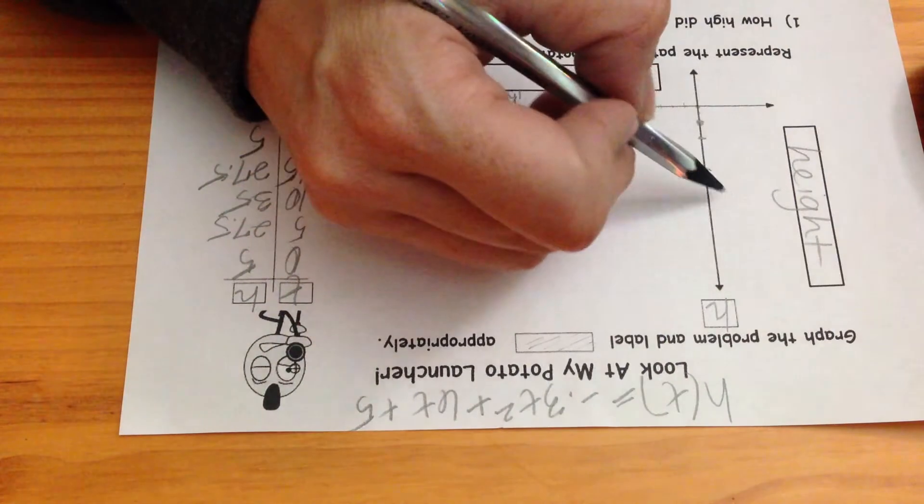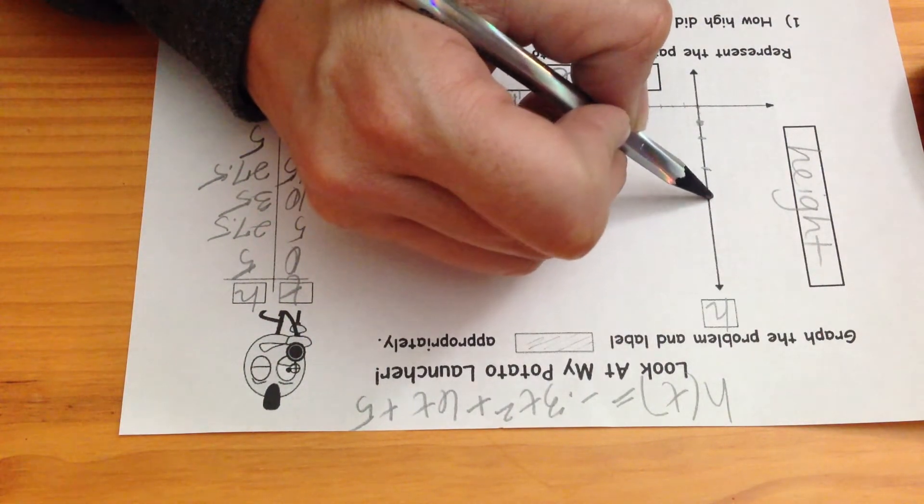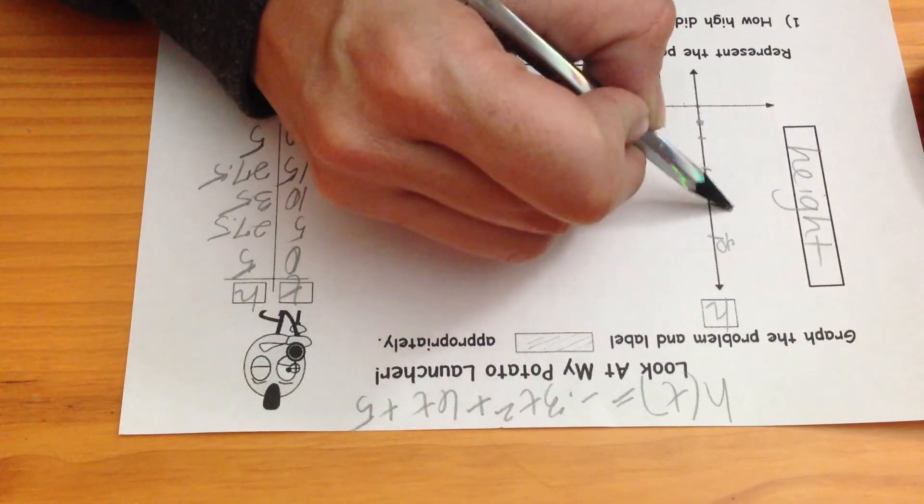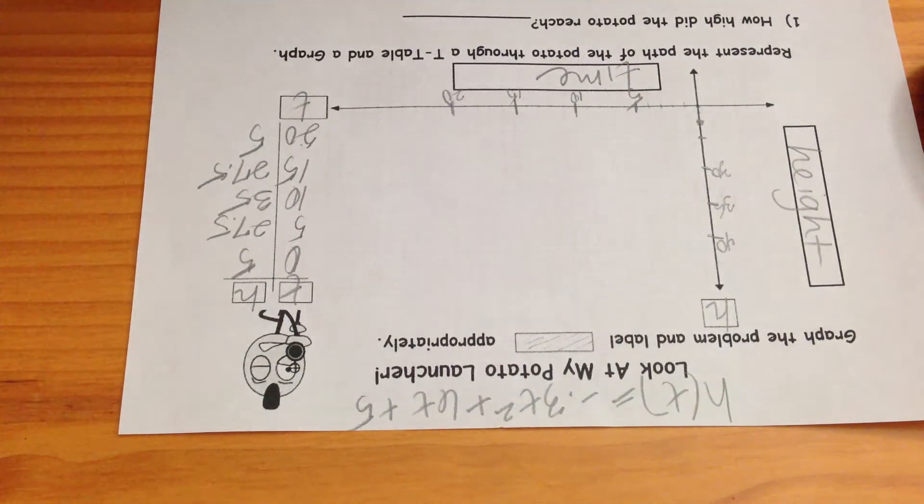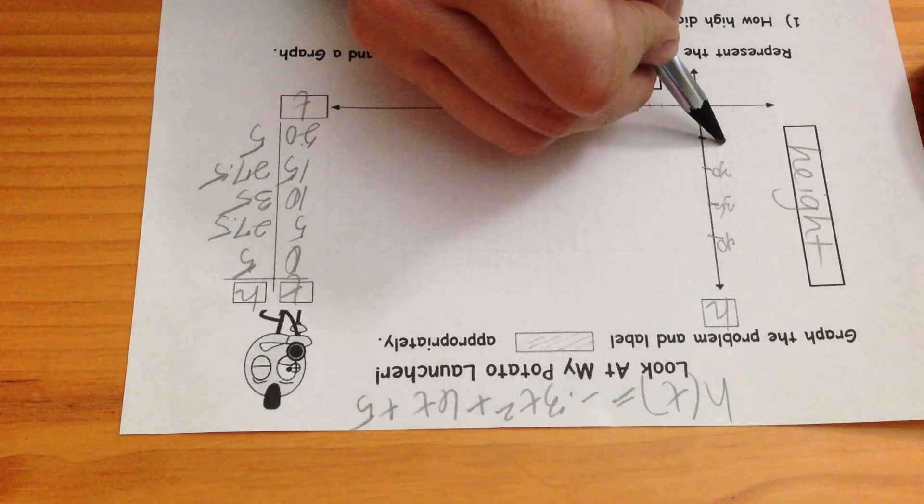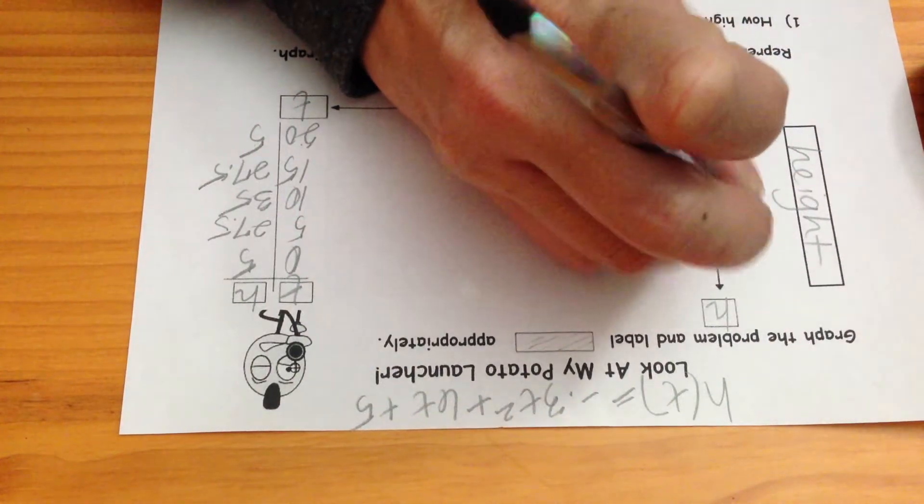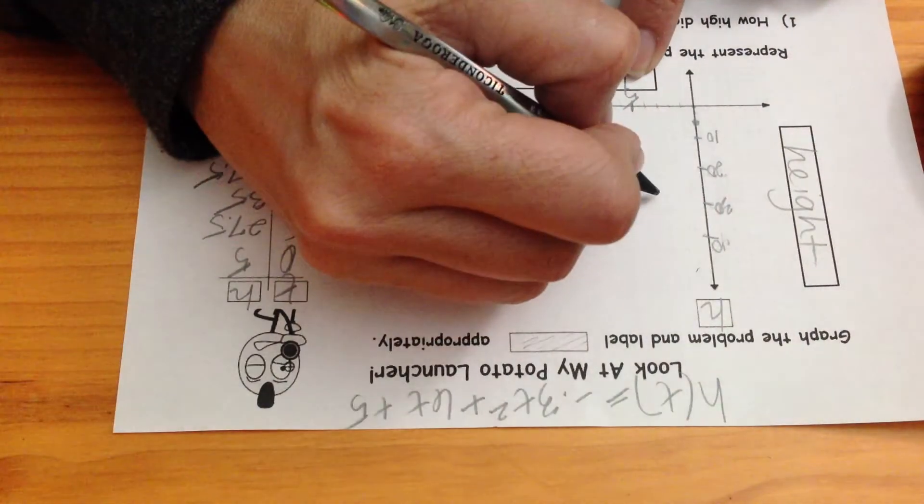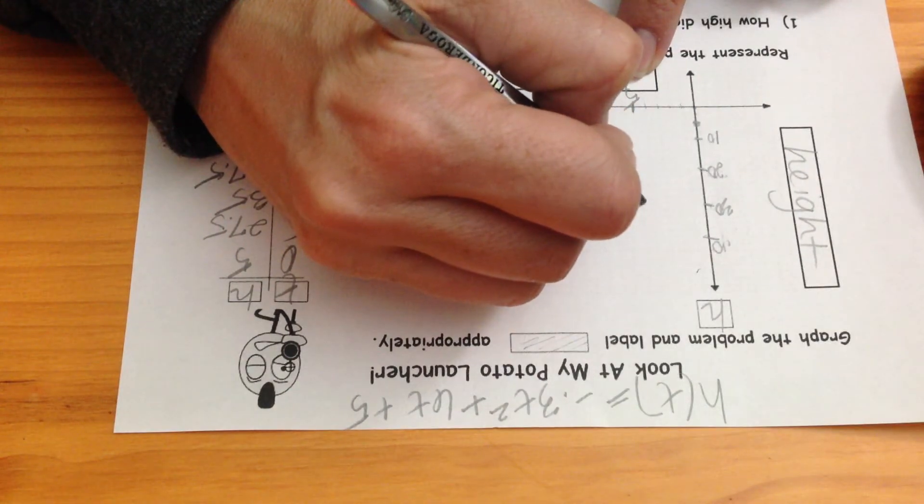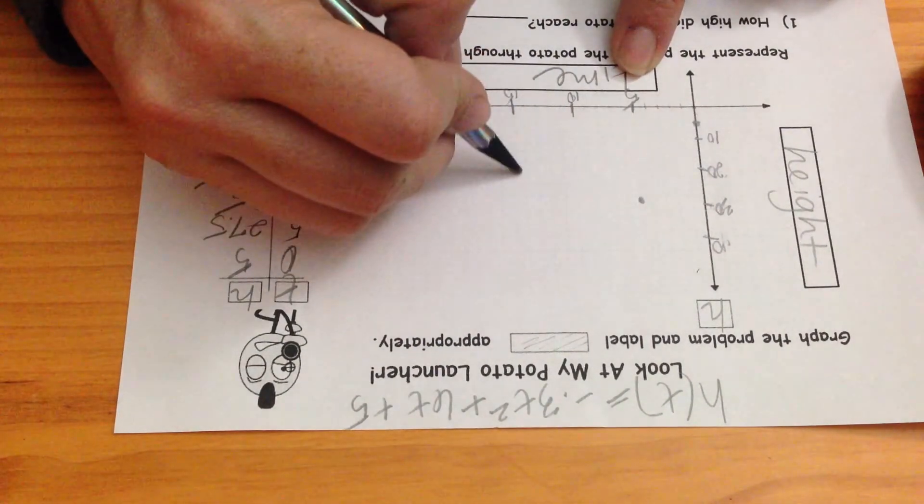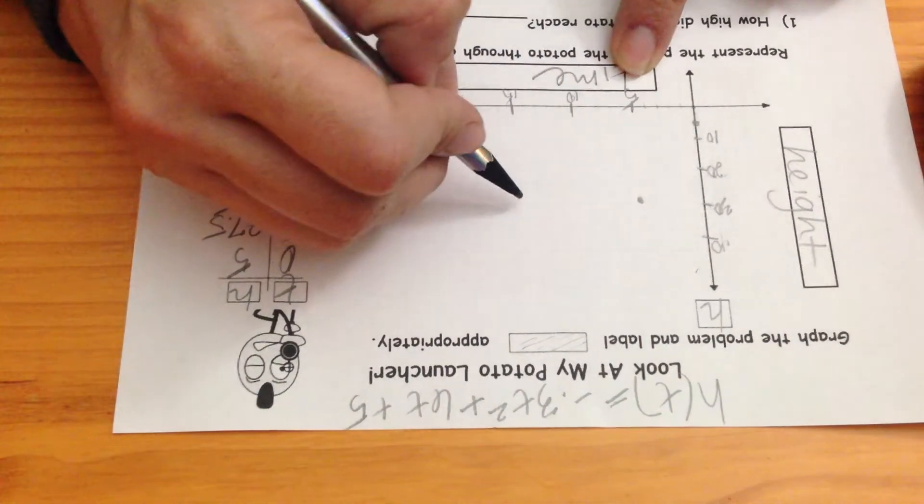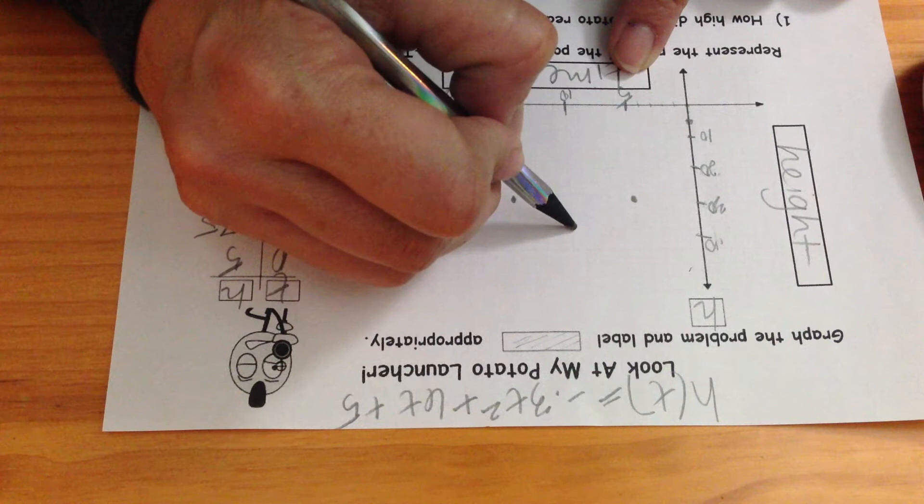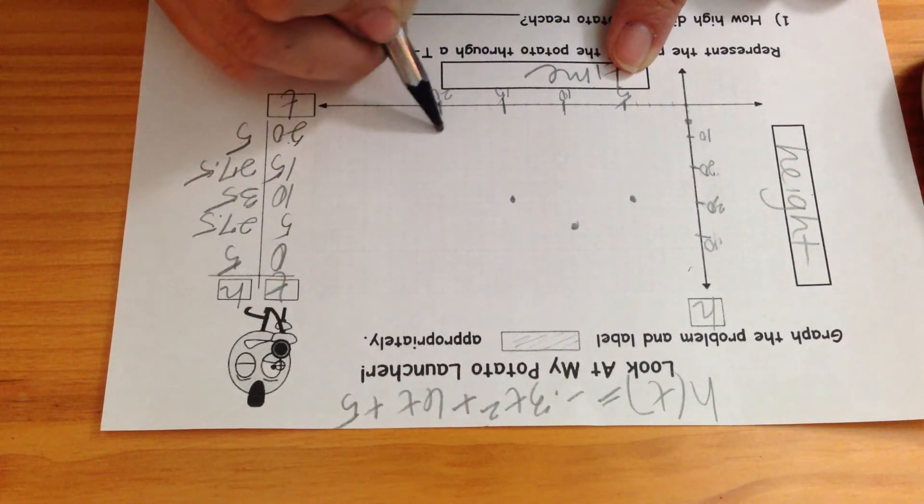Counting up the values, plotting the points on the graph. Good enough, yep. Perfect. 5 and 27 and a half, I'm going to go over to 15 and up there too, 20 was at 5, okay.